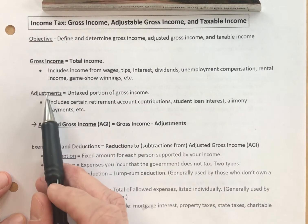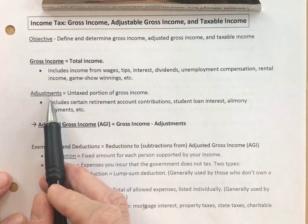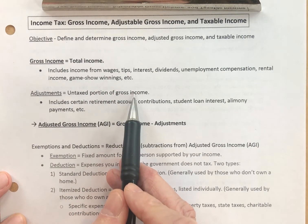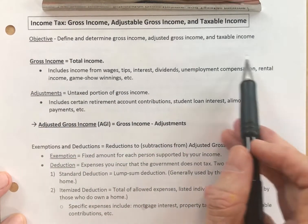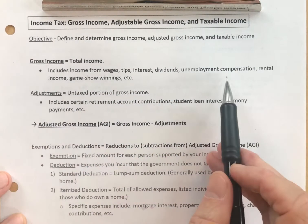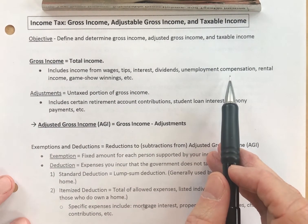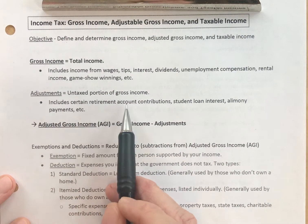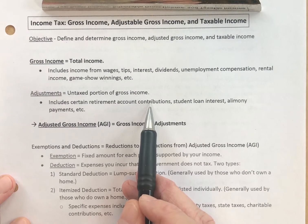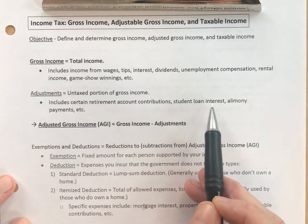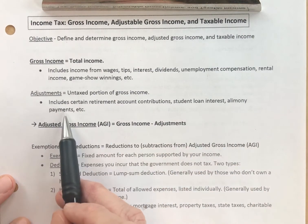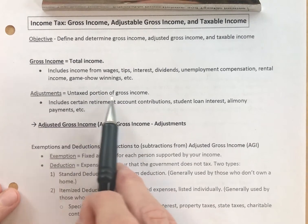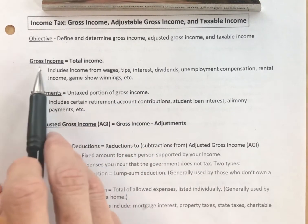From there, you can make adjustments. Adjustments are the untaxed portion of your gross income — some of the total of all this is untaxed. That includes certain retirement account contributions, student loan interest, alimony payments, etc.